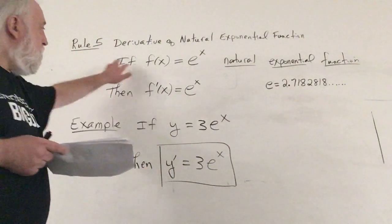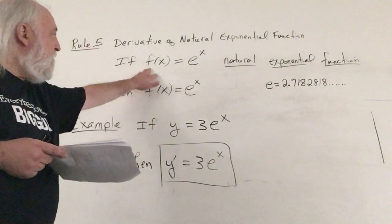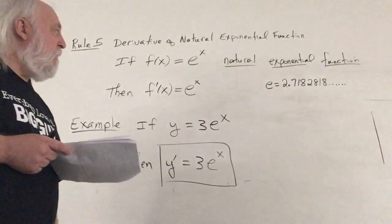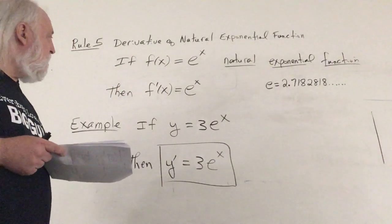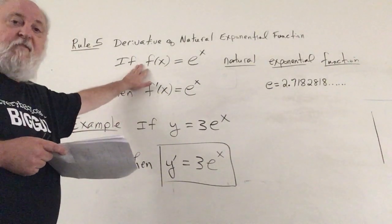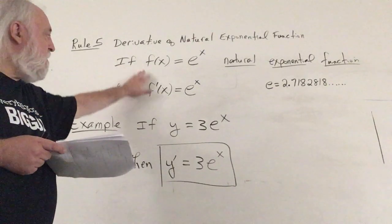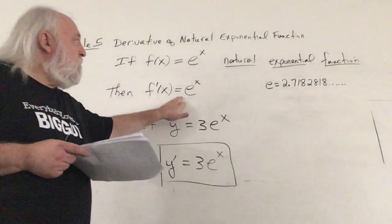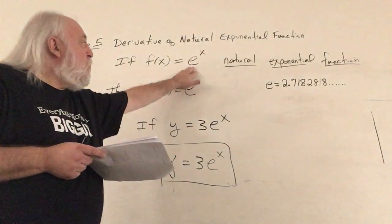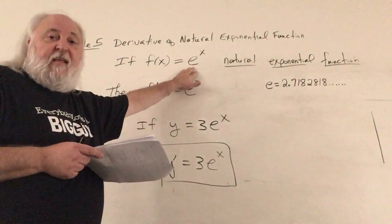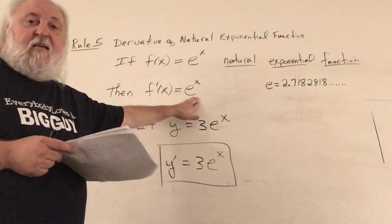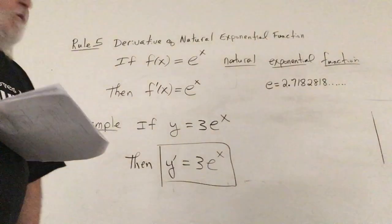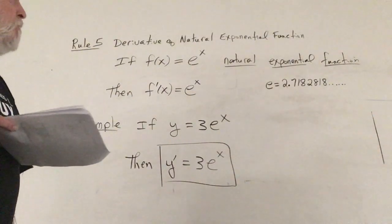So if f of x is equal to e to the x, the natural exponential function, then the derivative of f of x, denoted f prime of x, is just equal to e to the x. The derivative of e to the x is just itself, e to the x. It's one of the easiest derivatives to remember.